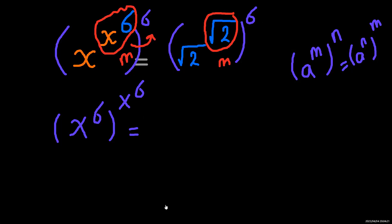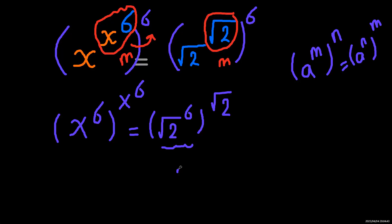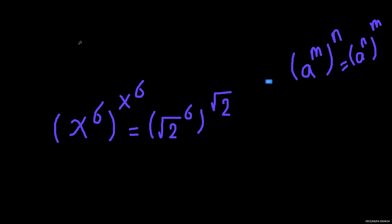On the right-hand side, we'll assume this is m, and m will come out. So we have the square root of 2 to the power of 6, again to the power of the square root of 2. That gives us 2 to the power of 3. So we can write: left-hand side x to the power of 6, again to the power of x to the power of 6; right-hand side is 2 to the power of 3, all to the power of the square root of 2.